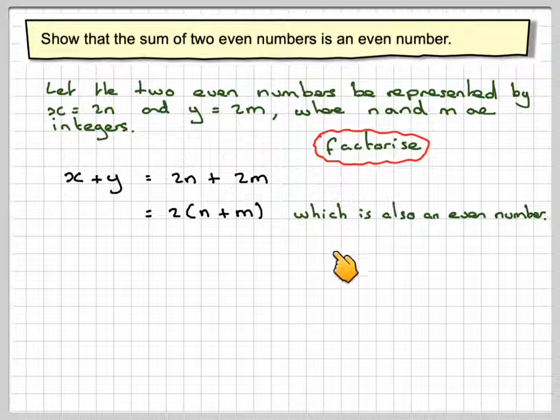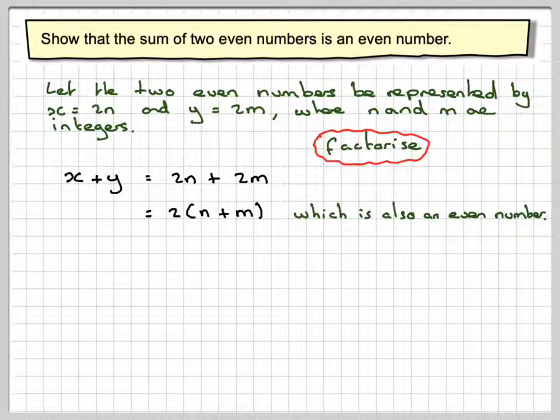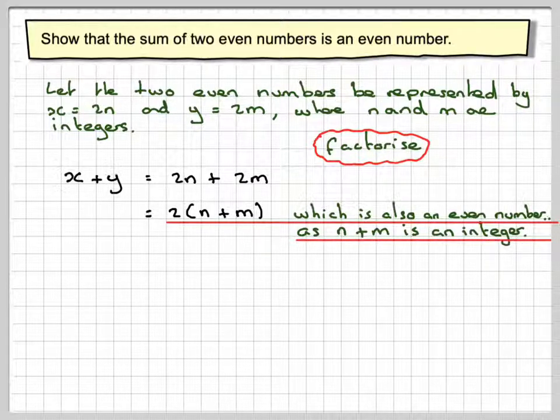OK, this is also an even number because n + m is also an integer, and we've got the 2 out in front.